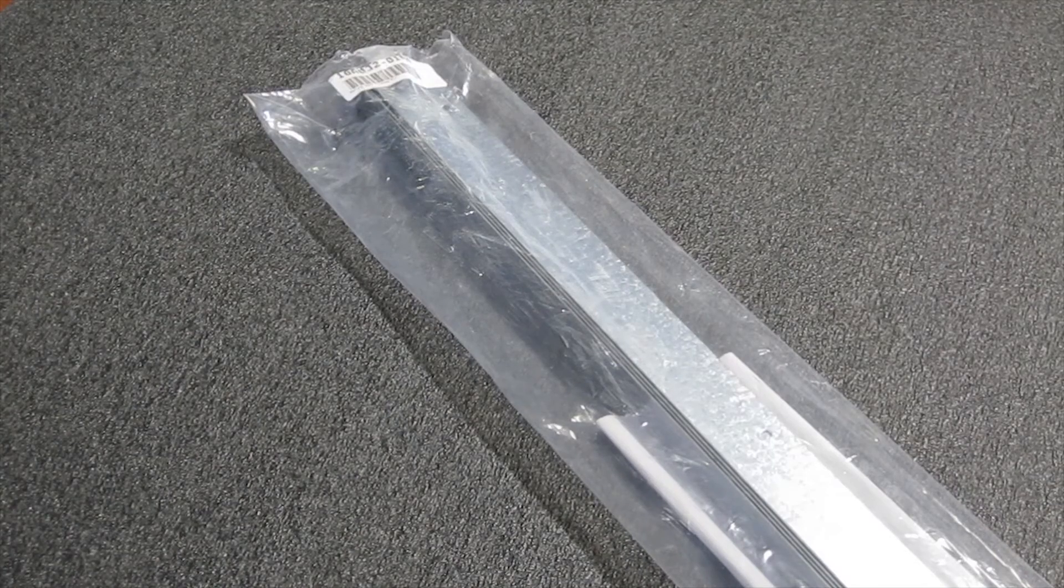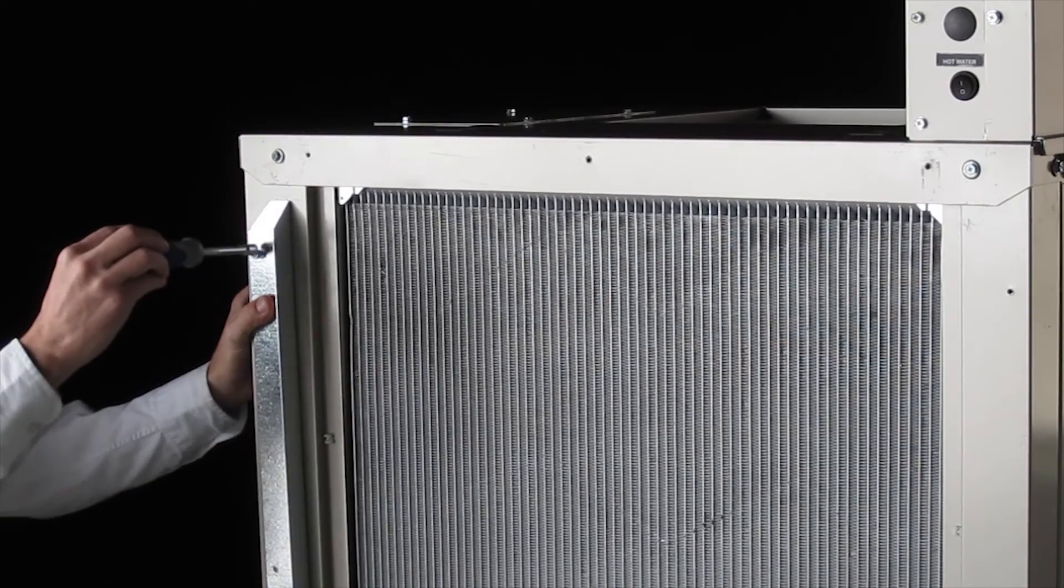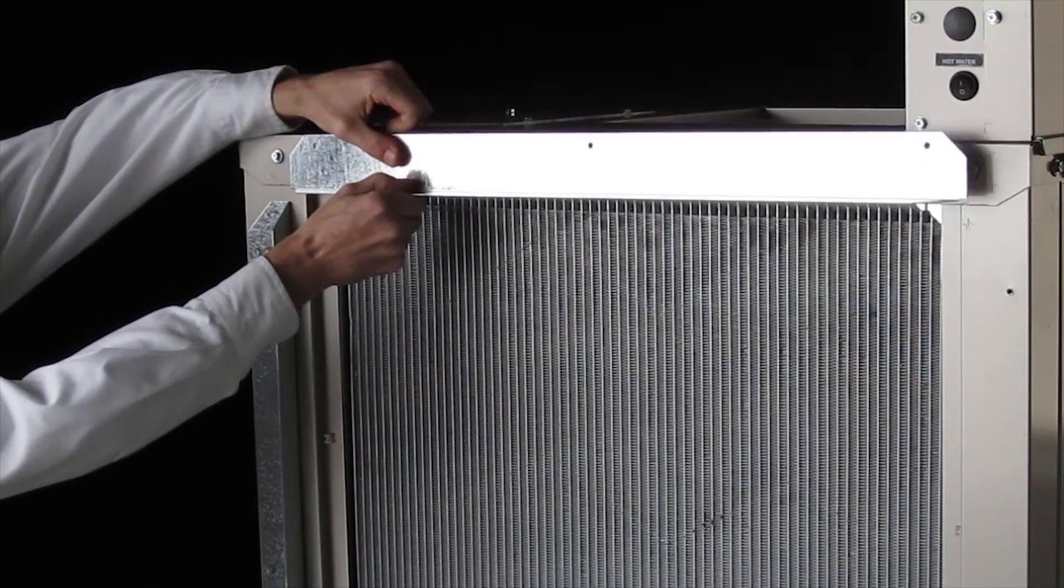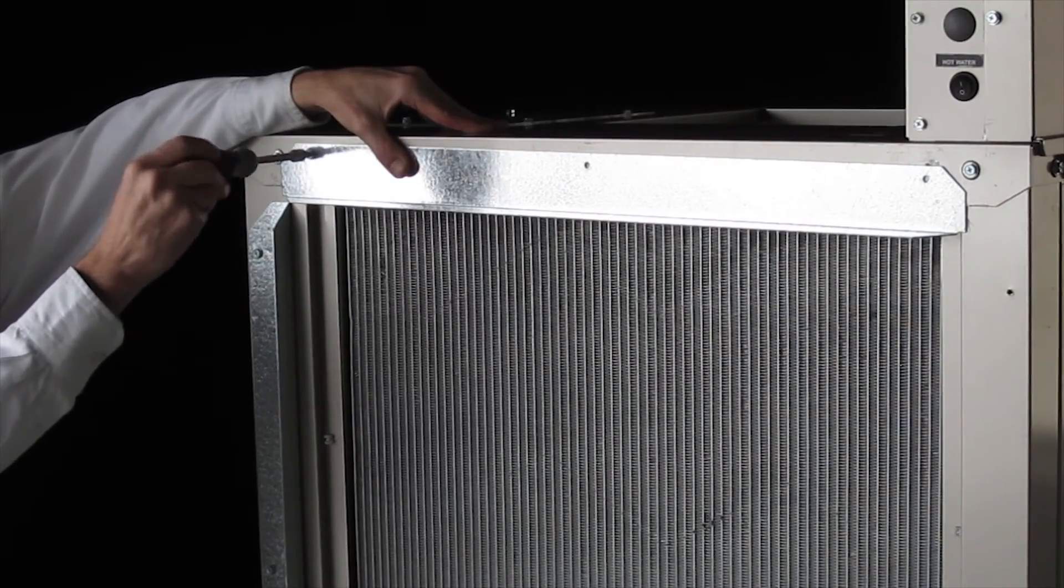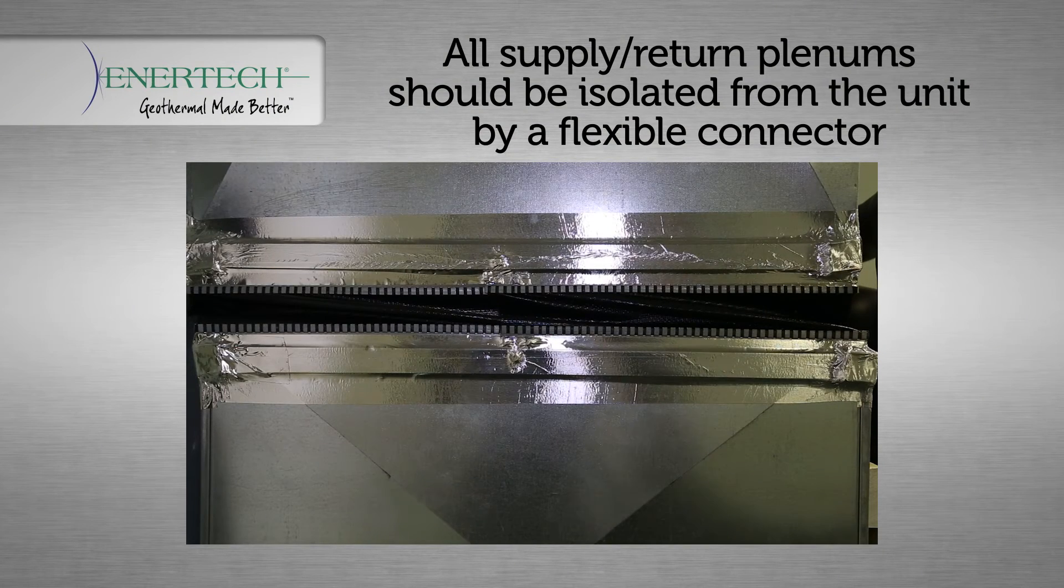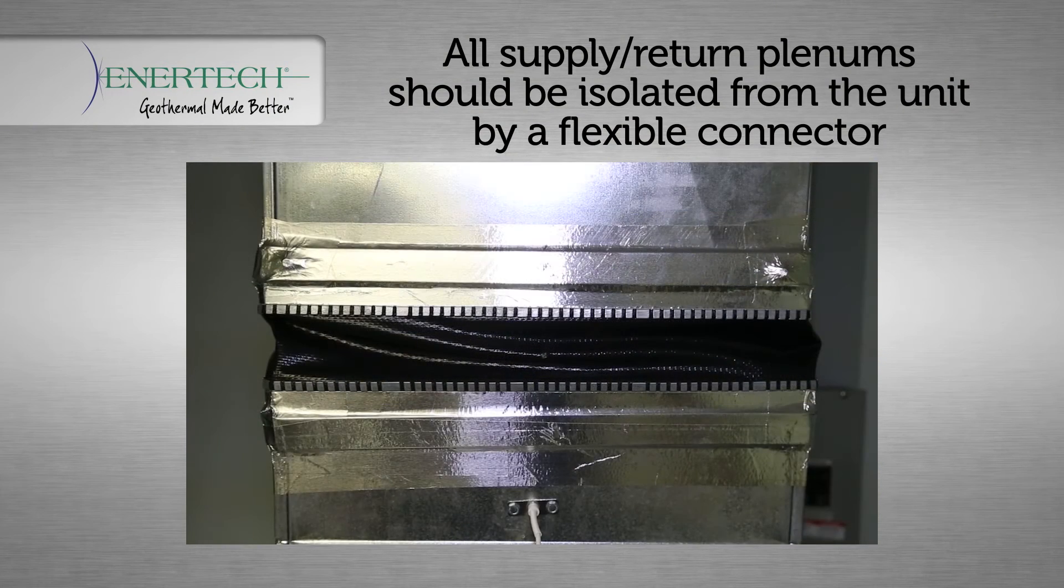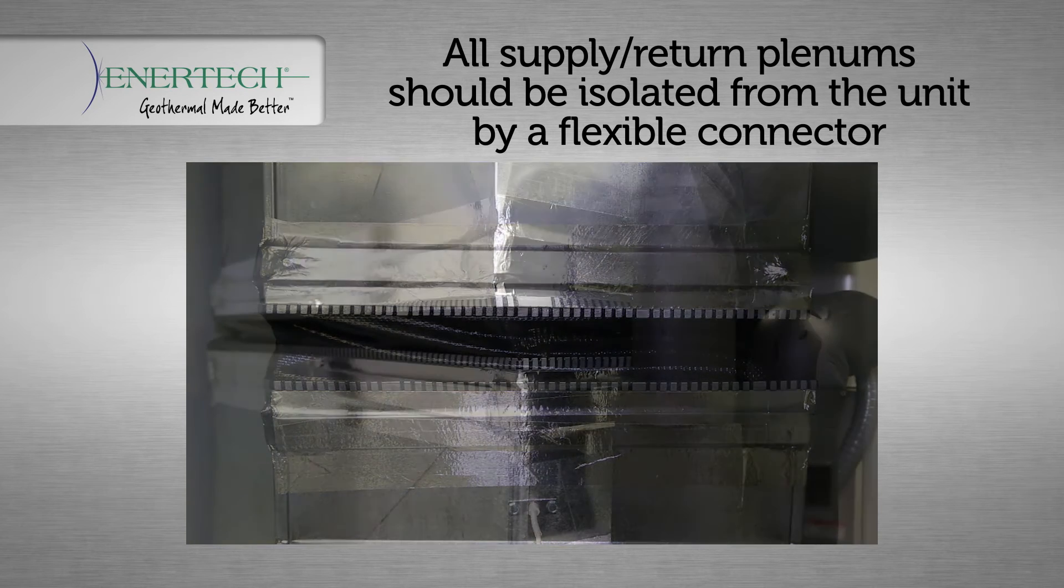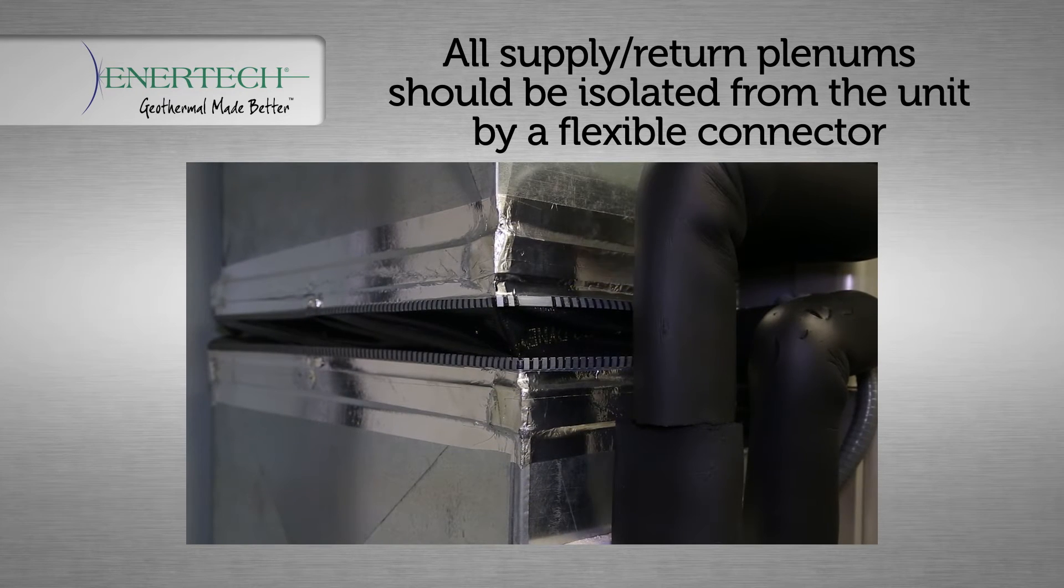As discussed in section 5 unit piping installation, install the return duct flanges provided in the kit package shipping inside the unit. Per the instructions, all supply return plenums should be isolated from the unit by a flexible connector or equivalent to prevent transfer of vibration noise to the ductwork. The flex connector should be designed so as to not restrict the airflow.